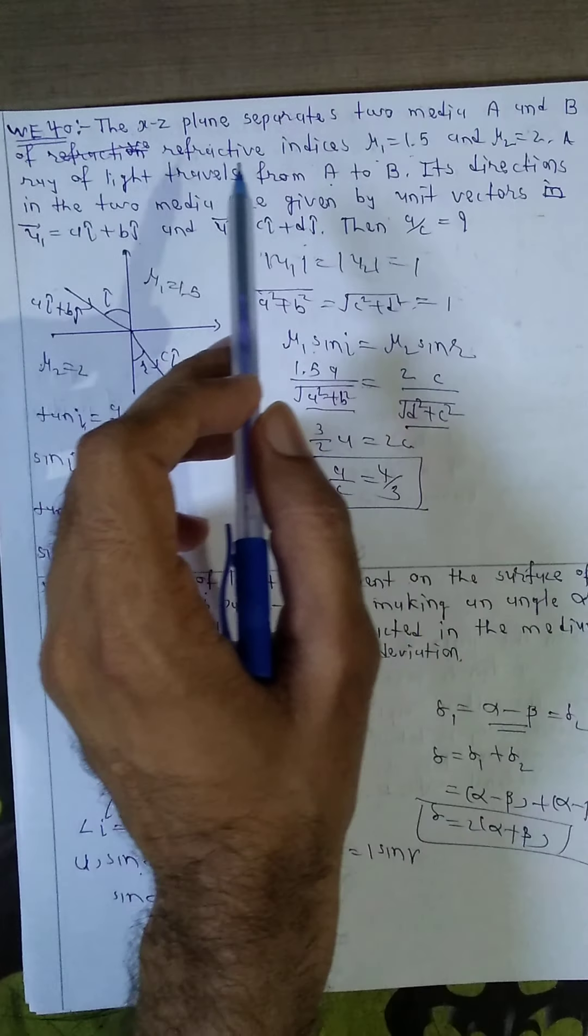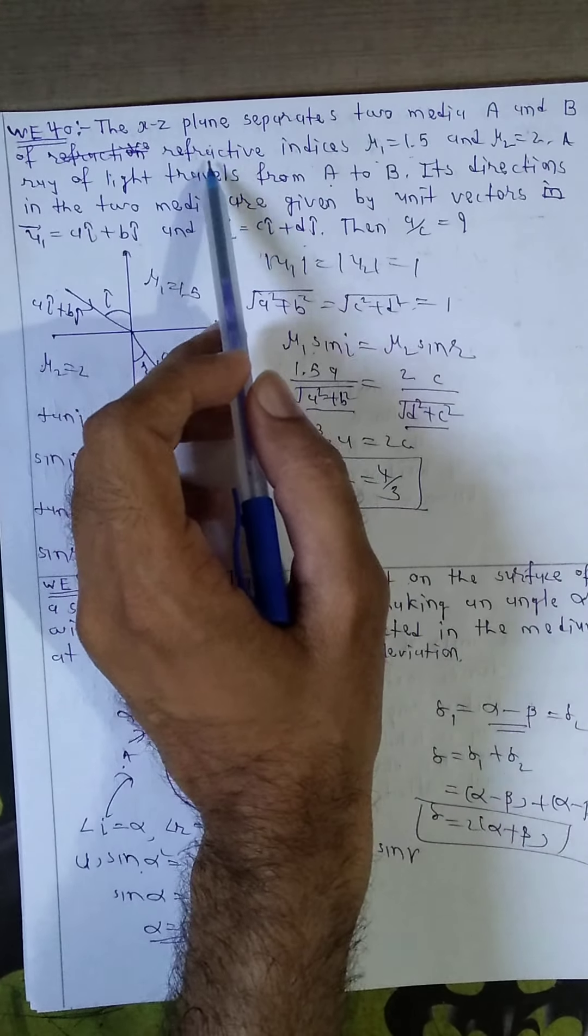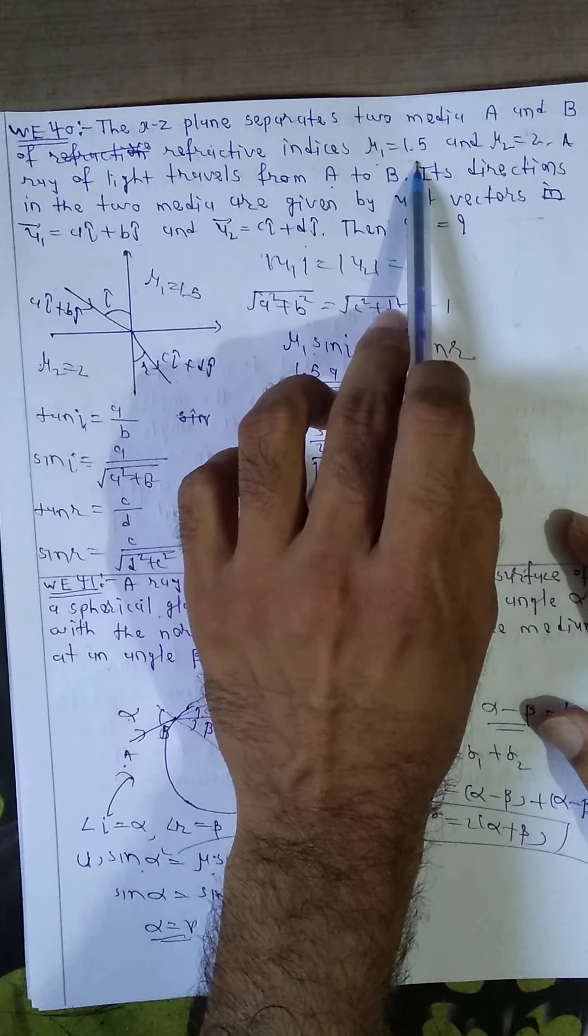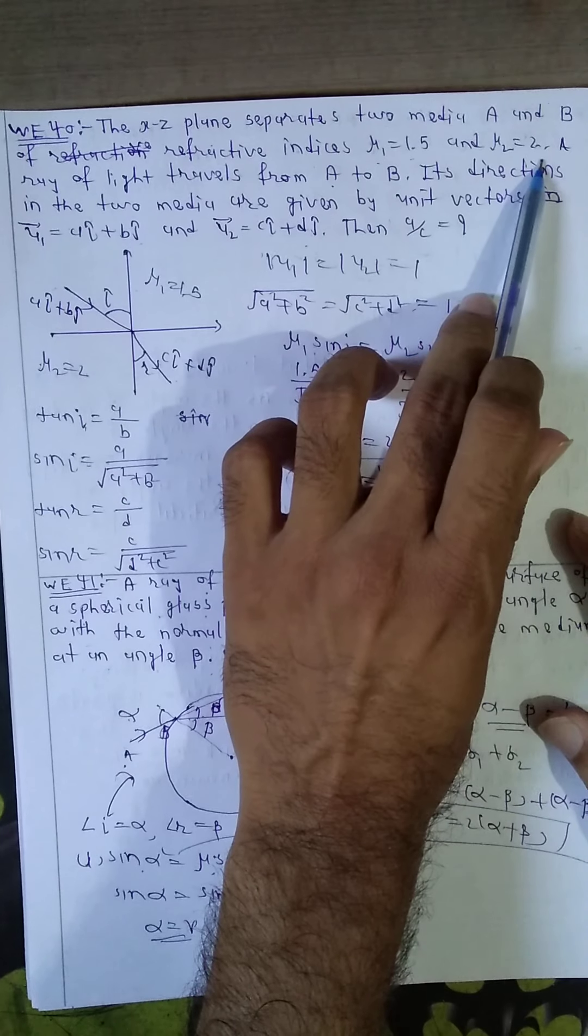This means two planes are medium, XZ plane, A and B. This is mu1 equal to 1.5, mu2 equal to 2.